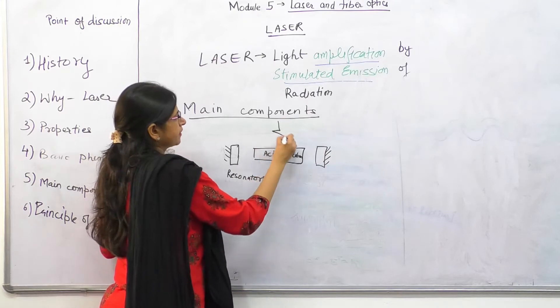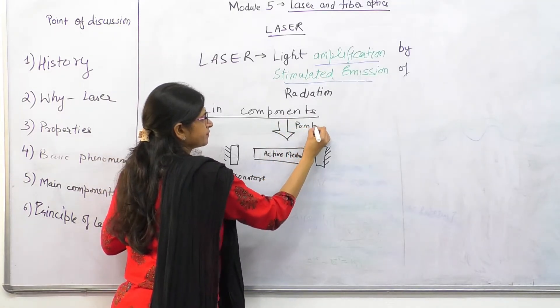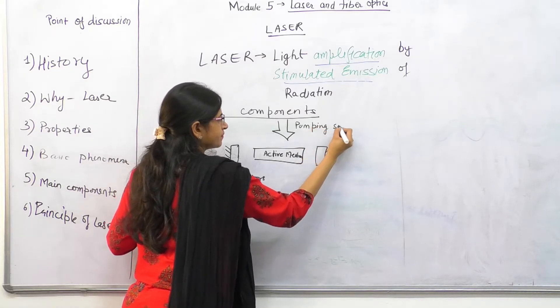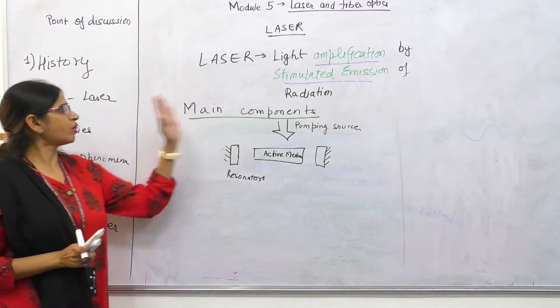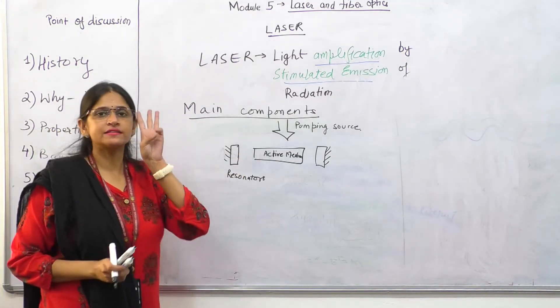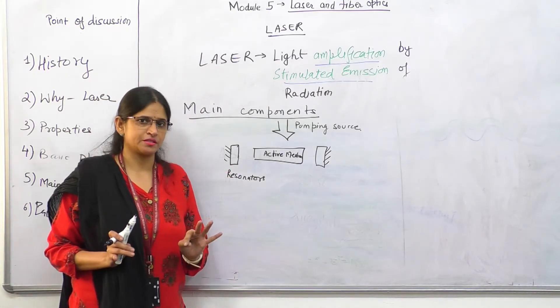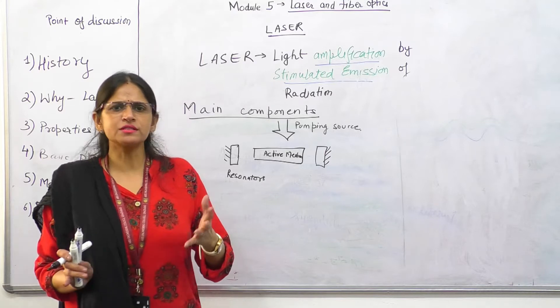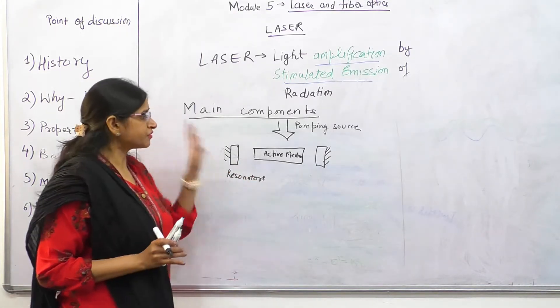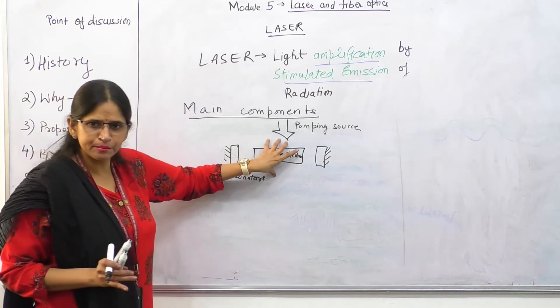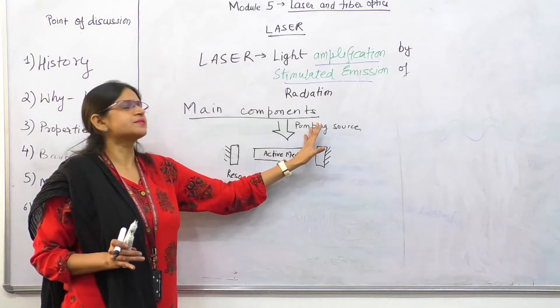Resonator and the third one is pumping source. So main components of laser, there are three main components in every laser. Without those components, the laser is difficult to be fabricated. The three main components are first, the active medium, second is the resonator, and the third is pumping source.